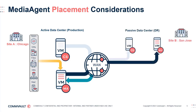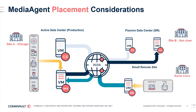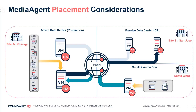There would be another media agent in the DR site in San Jose, where a DR CommServe stands by alongside an always-on media agent to receive the additional copy of data. Finally, the small remote site in Santa Clara also requires a local copy of data for recovery purposes, so at least one media agent is placed there as well, passing data along to the active data center for redundancy.